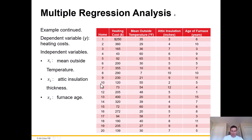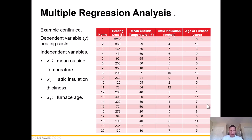We have the home number, heating costs, mean outside temperatures for 20 houses, attic insulation in inches, and the age of the furnace in years. X sub 1 is the mean outside temperature — the first independent variable. Attic insulation is the second independent variable, the age of the furnace is the third, and heating cost is the dependent variable. We could call this time series data or panel data that we can use to formulate a regression equation.